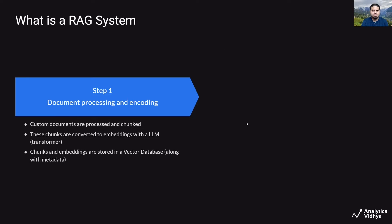Let's understand in more detail the two major steps to build and run a RAG system. The first step is document processing and encoding, where you take in your custom documents and your custom knowledge base. Custom documents are processed and chunked. These chunks are typically converted into embeddings with a large language model embedding model, which is usually a transformer model.